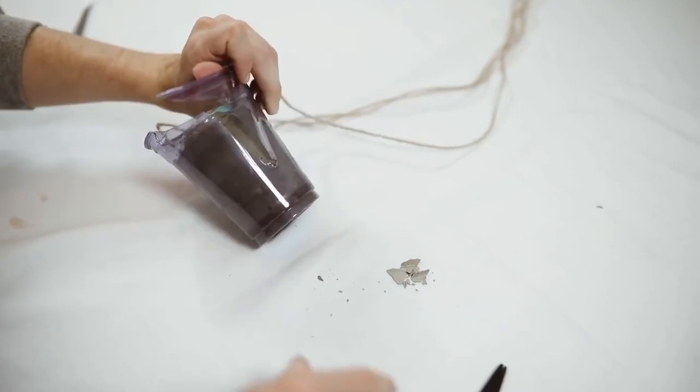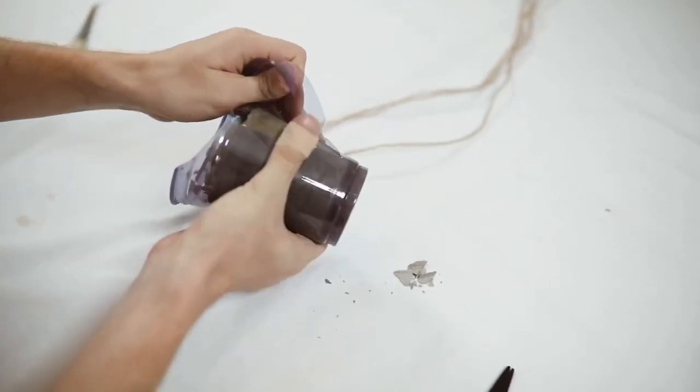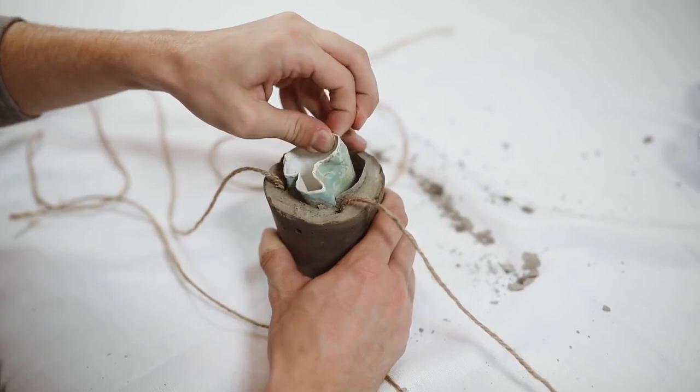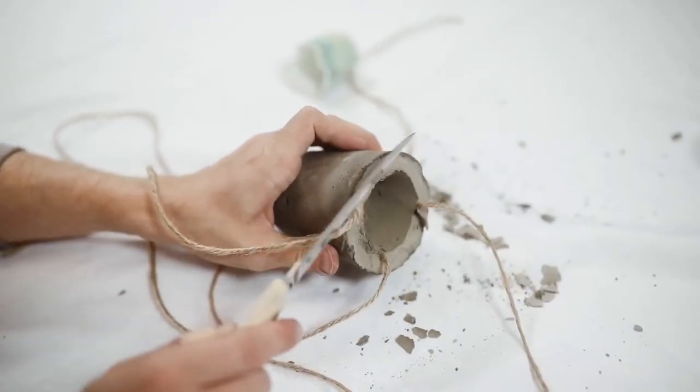You're going to want to let that dry overnight or until it is nice and cured, and then pull off your plastic cup in the end and remove the Dixie cup on the inside.